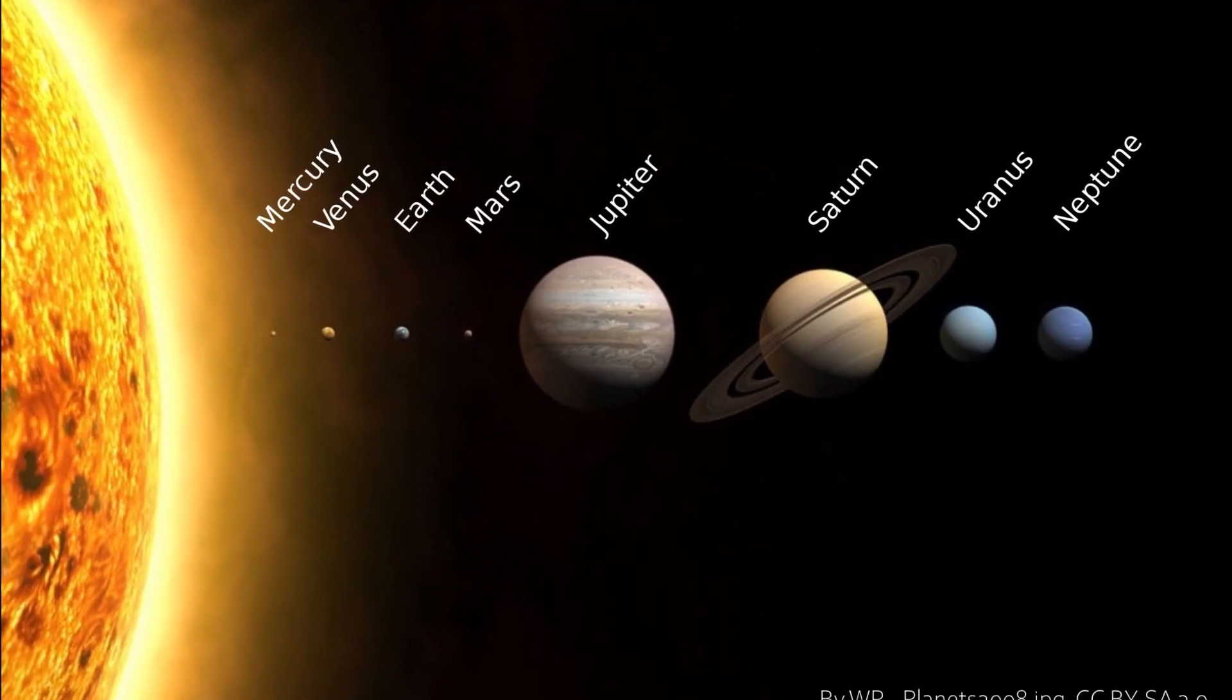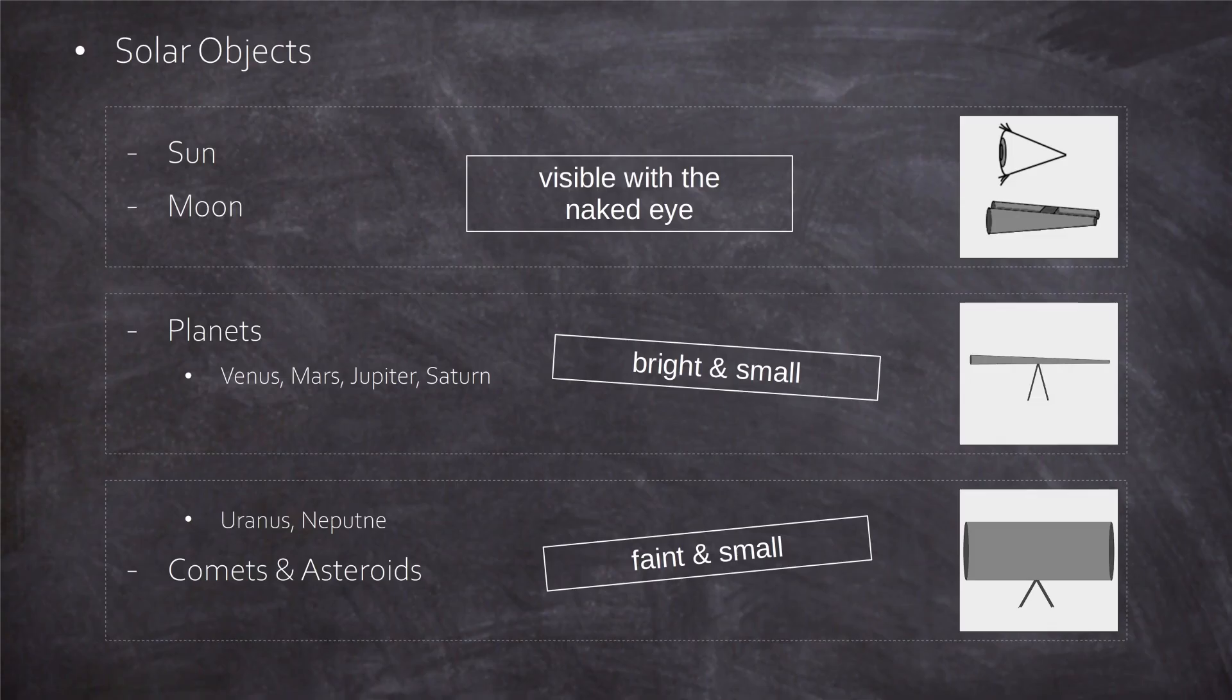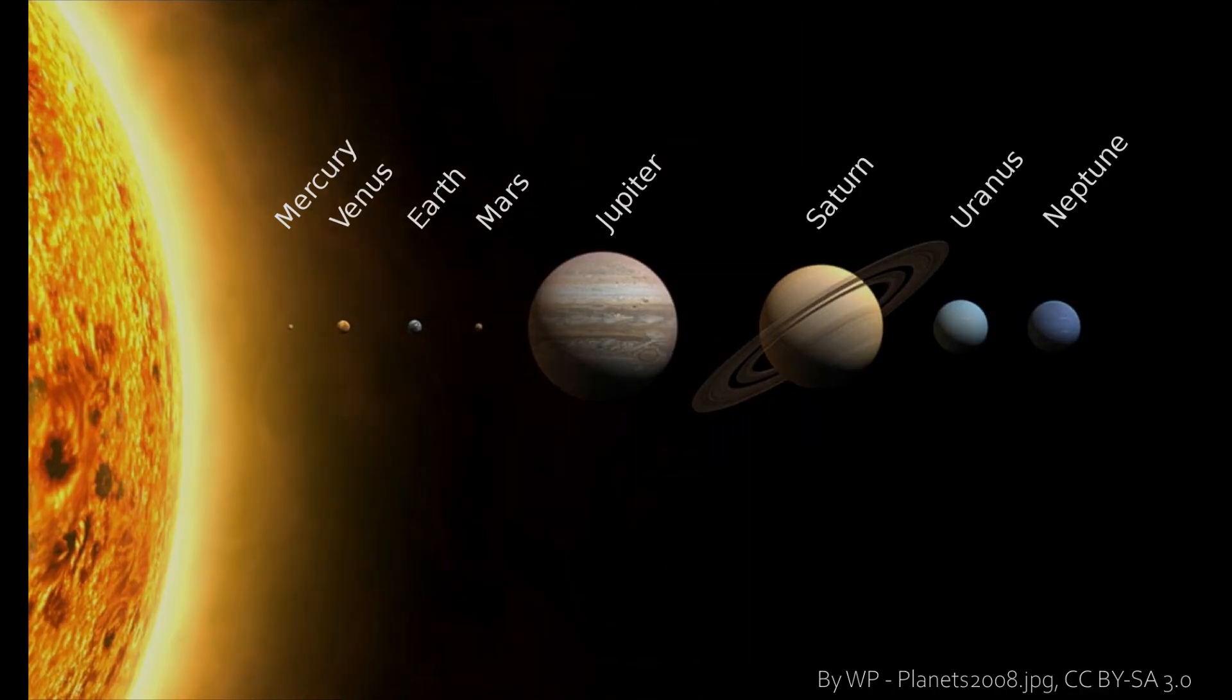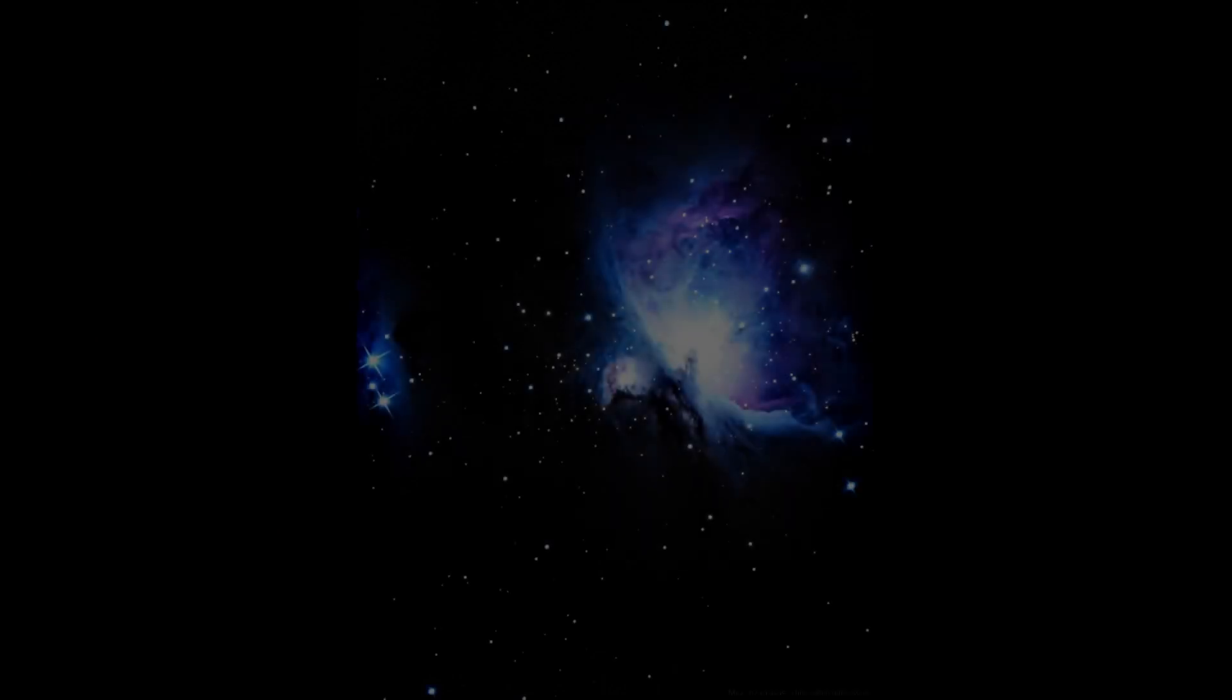In the first part we covered the objects inside our solar system. We saw the sun and the moon and discovered just how tiny but bright the planets appear in the night sky, that we need a long scope to observe or image them. In today's part 2 we'll expand our view, leave the solar system and target the so-called deep sky objects.